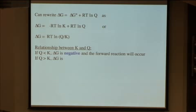If Q is greater than K, what is ΔG? It would be positive, and the reverse direction would occur. So if Q is larger than K, it has more products in its terms, and at equilibrium there are less products, so you need to go in a direction that will get rid of some of those products so you'll reach equilibrium again.